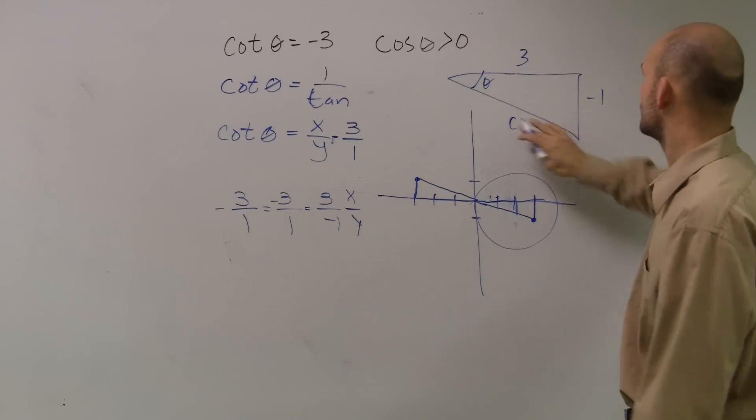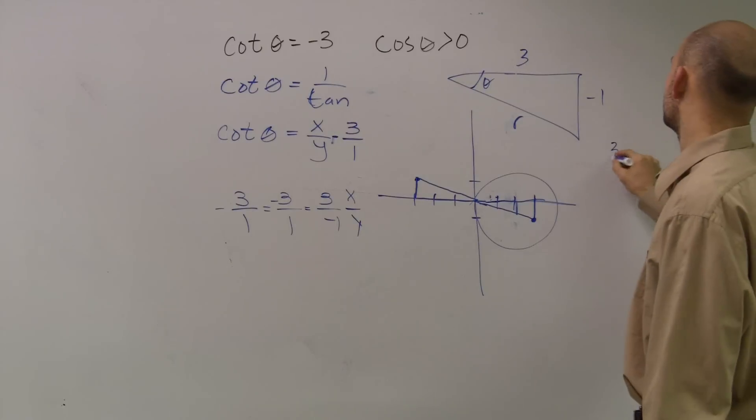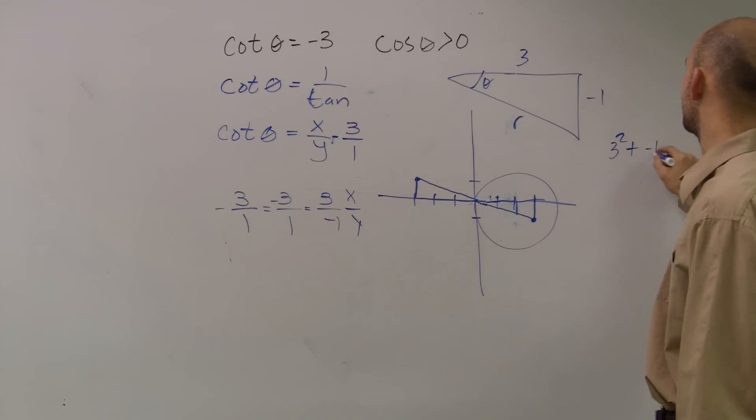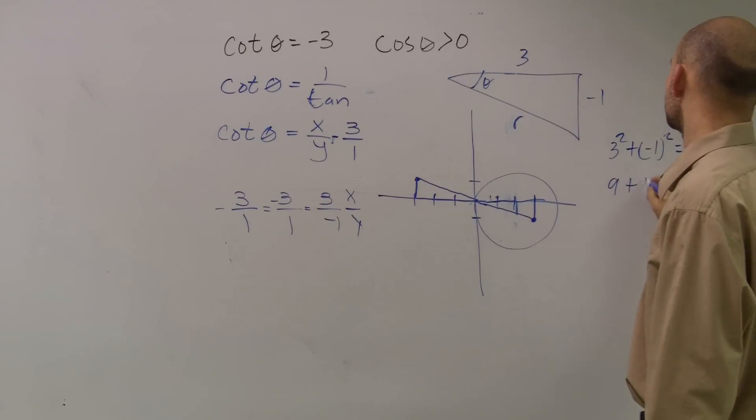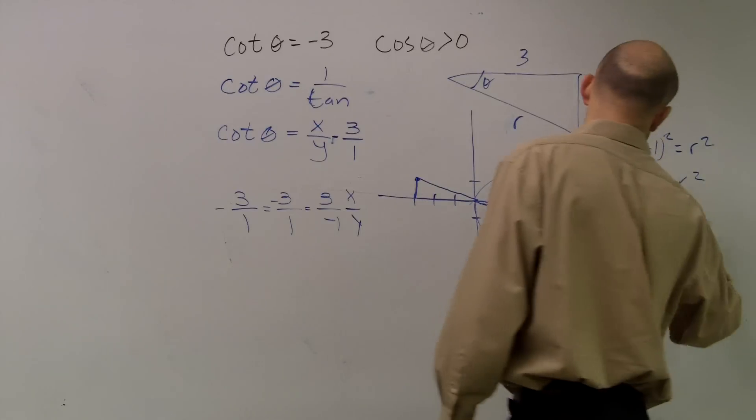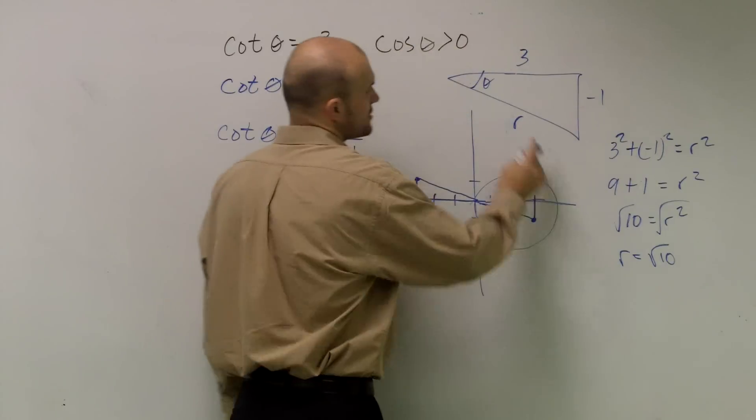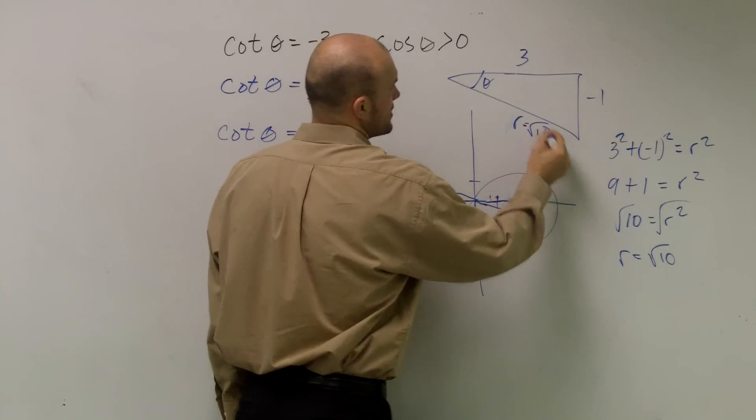So to find c, or actually what we're using it now, we're calling it r. So I have 3 squared plus negative 1 squared equals r squared. 9 plus 1 equals r squared. 10. So therefore, r now equals the square root of 10.